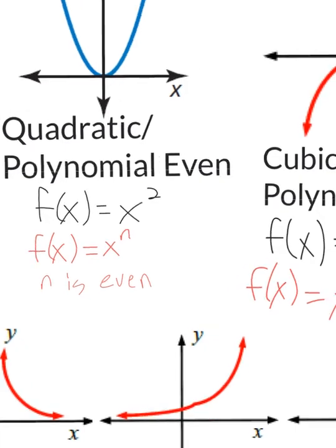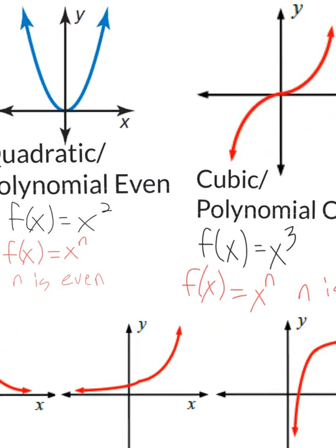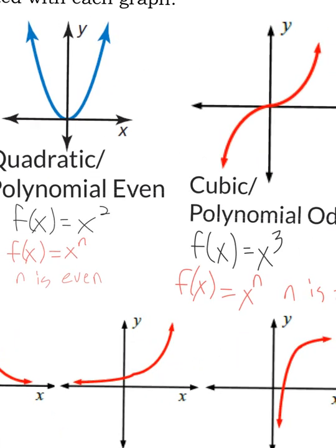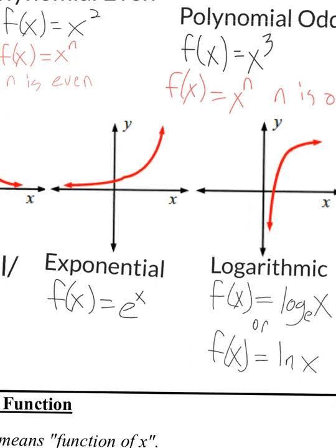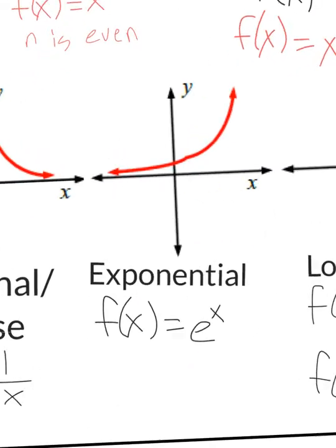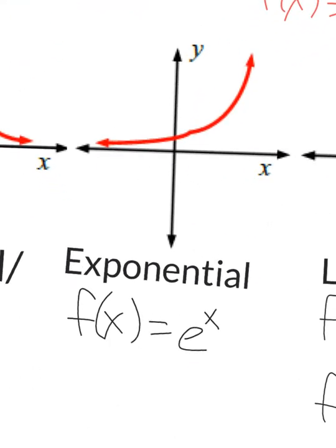Exponential functions are commonly confused with polynomial functions. A polynomial function will have a number for your exponent. An exponential function will have x in the exponent — that's how you distinguish between the two. And the graphs look very different.